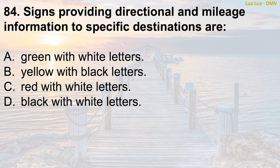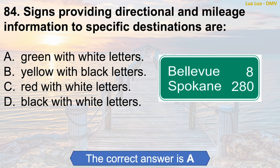Question 84: Signs providing directional and mileage information to specific destinations are — A. Green with white letters. B. Yellow with black letters. C. Red with white letters. D. Black with white letters. The correct answer is A: Green with white letters.